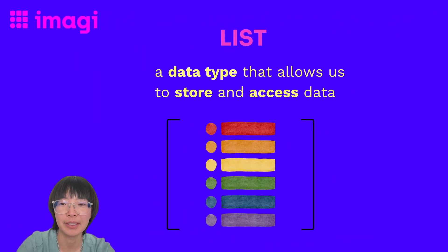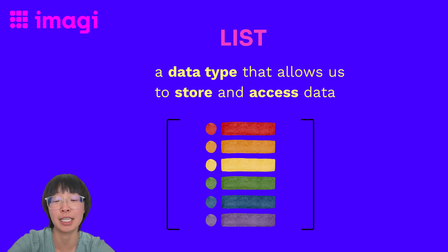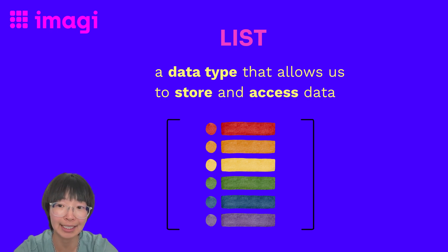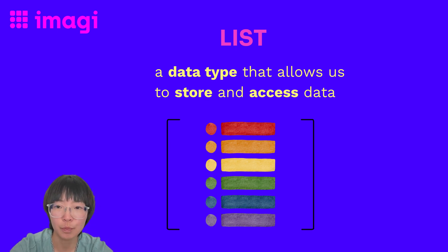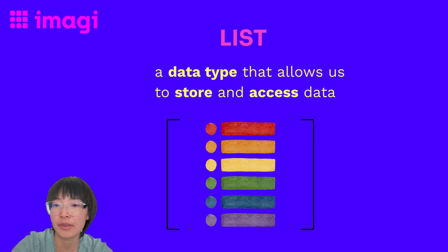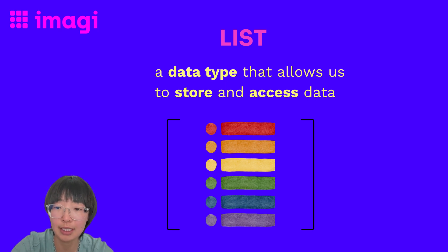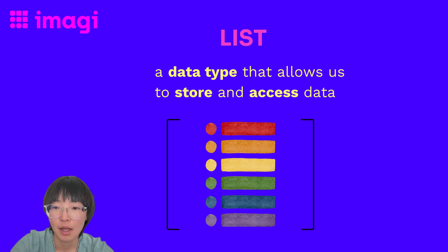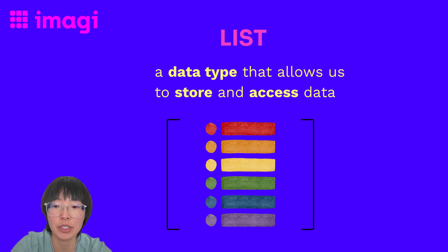Now let's learn a bit about lists in Python. A list is a data type that allows us to store and access data easily. Unlike dictionaries and tuples, which are also data types, lists are ordered. And with the help of the random module, you can shuffle the order of the list elements, giving you different outcomes each time. By combining Python's random module with lists, you can add an element of surprise to your programs, making them more interactive and fun.